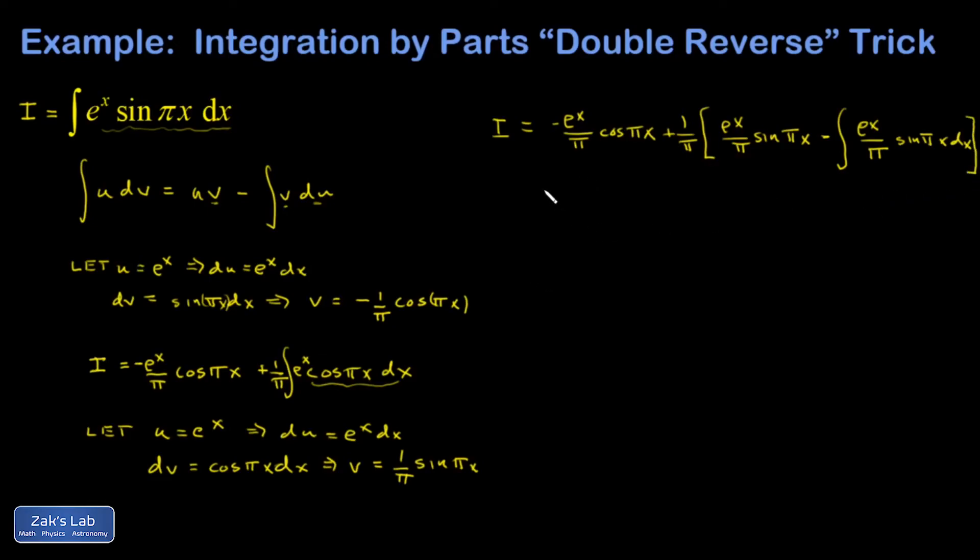So I can clean things up a little bit. I'm going to go ahead and distribute the 1 over π through this. And I end up with e^x over π² sine πx. And then in this integral, I can pull a negative 1 over π out. I'm really just pulling a 1 over π out. And I'm also distributing this 1 over π to it. So I end up with minus 1 over π² integral e^x sine πx dx. And this thing is just another copy of I. And that's the key to this whole double reverse trick.